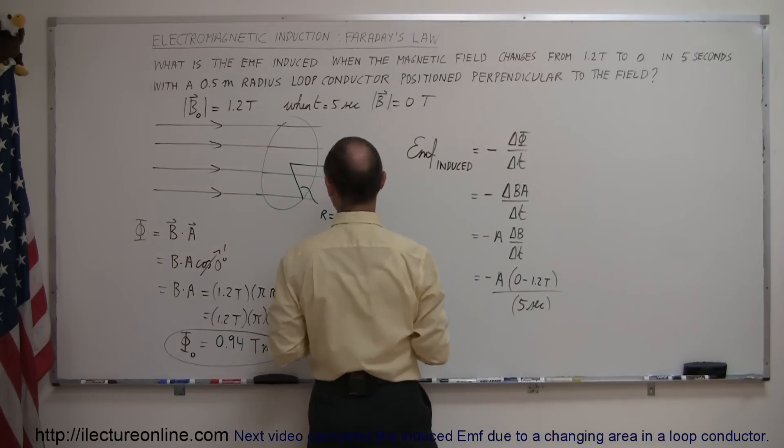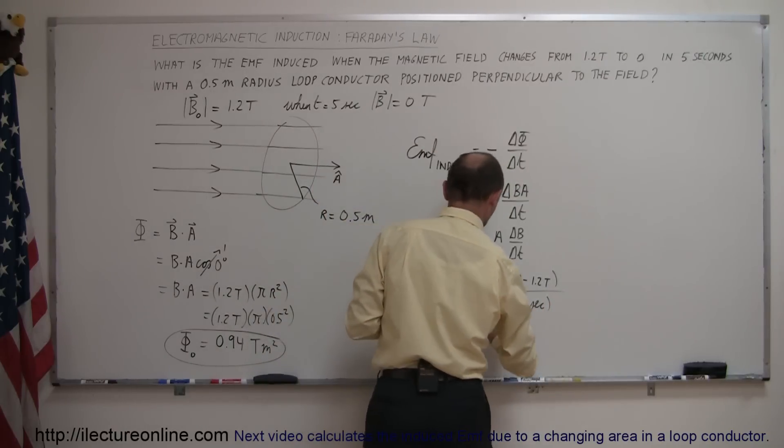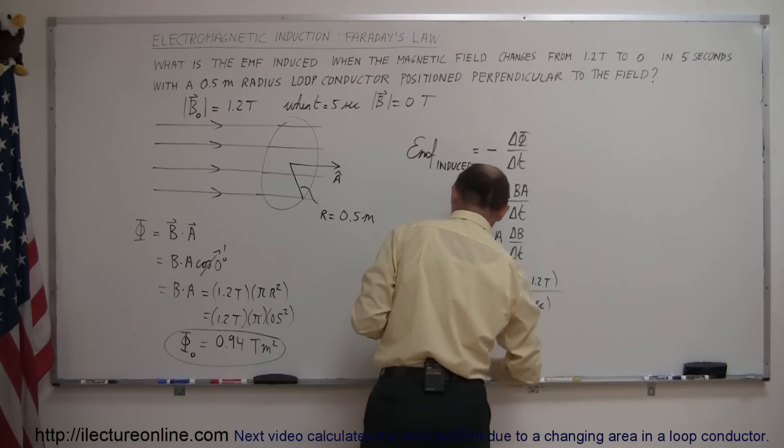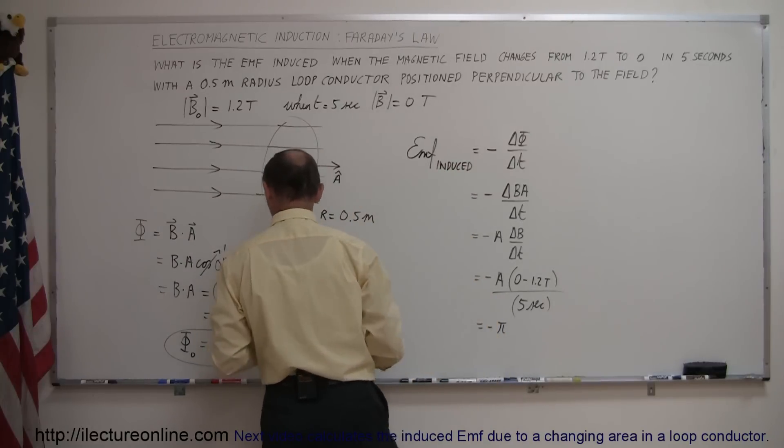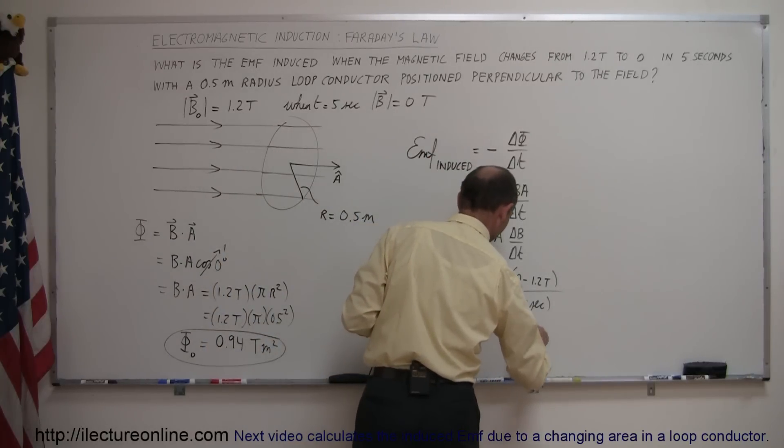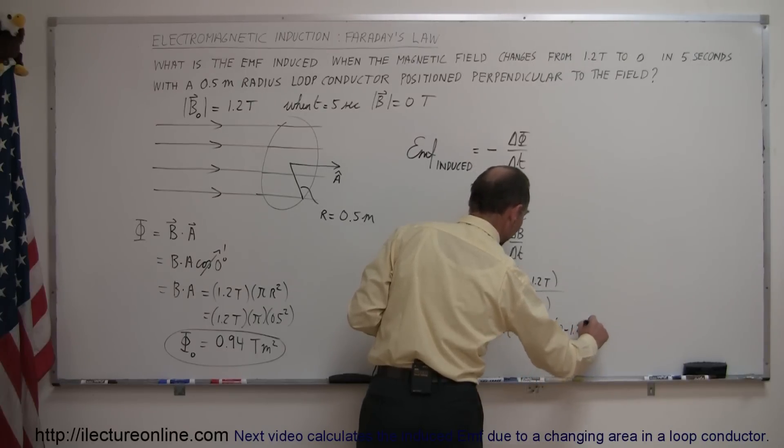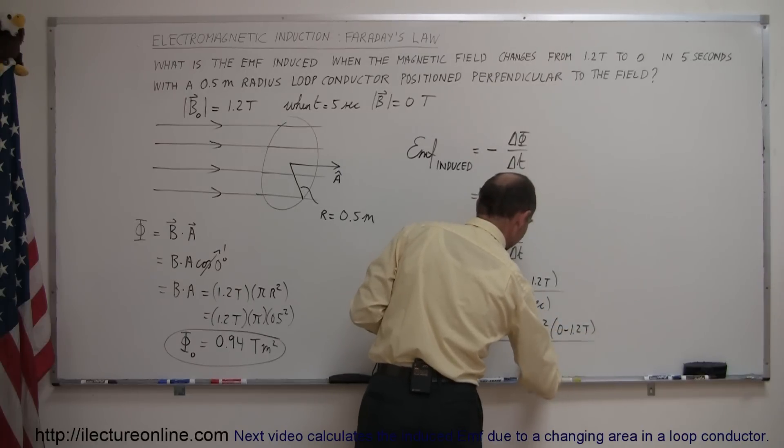And of course the area in this case would be pi r squared, so this is equal to minus pi times r squared, and I might as well put in the units, or the measurement for r, it's 0.5 meters, so 0.5 meters squared times 0 minus 1.2 teslas, and all divided by 5 seconds.